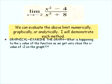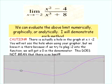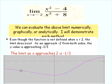For the graphical approach, we want to examine the graph — what is happening to the y value of the function as we get very close to x equals negative 2? Caution: there is actually a hole in the graph at x equals negative 2. You will not see the hole when you use your grapher, but we know it is there because plugging negative 2 into the function gives a zero in the denominator. However, this does not mean that there is no limit. The limit is asking what the y value is approaching as x approaches negative 2; what is happening at negative 2 makes no difference. Even though the function is not defined when x equals negative 2, the limit does exist. As we approach negative 2 from both sides, the y value is approaching negative one-third.